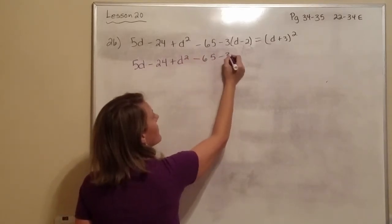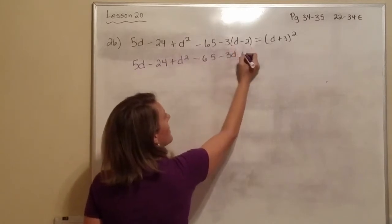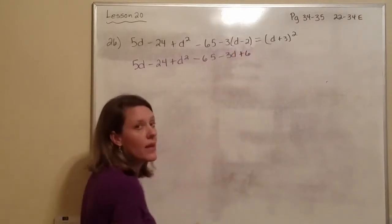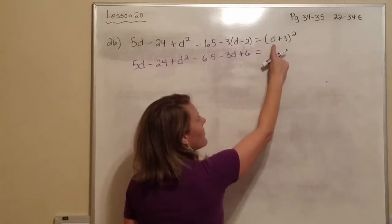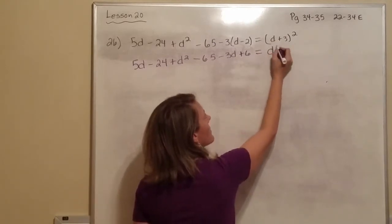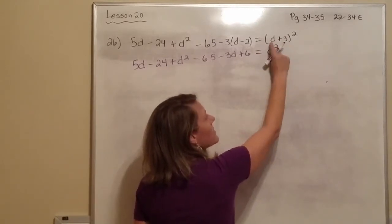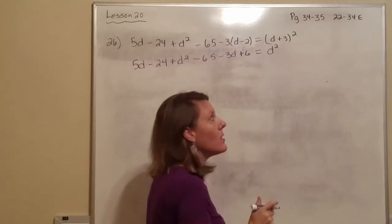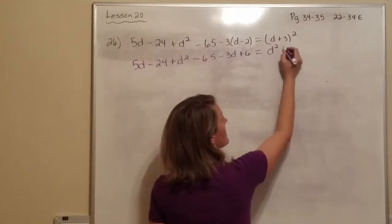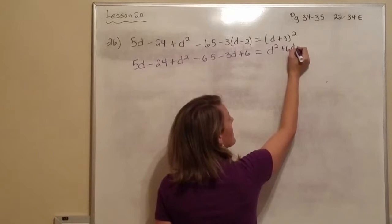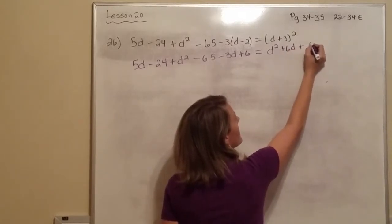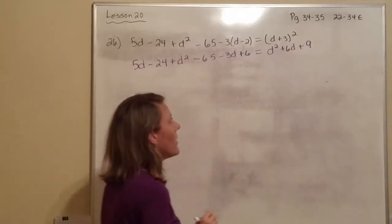So that's a negative 3D. That would be a plus 6, because a negative times a negative is positive. Alright, remember, we square the first, we multiply, and then double. So double of 3D is 6D. And then we square. 3 times 3 is 9. Alright, there's our pattern.